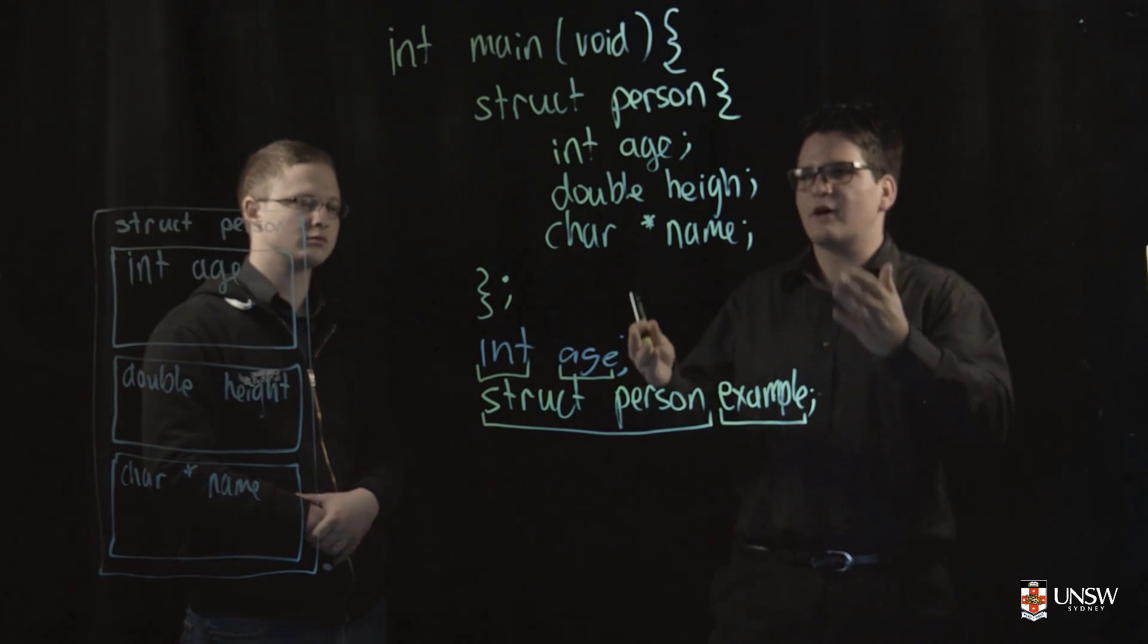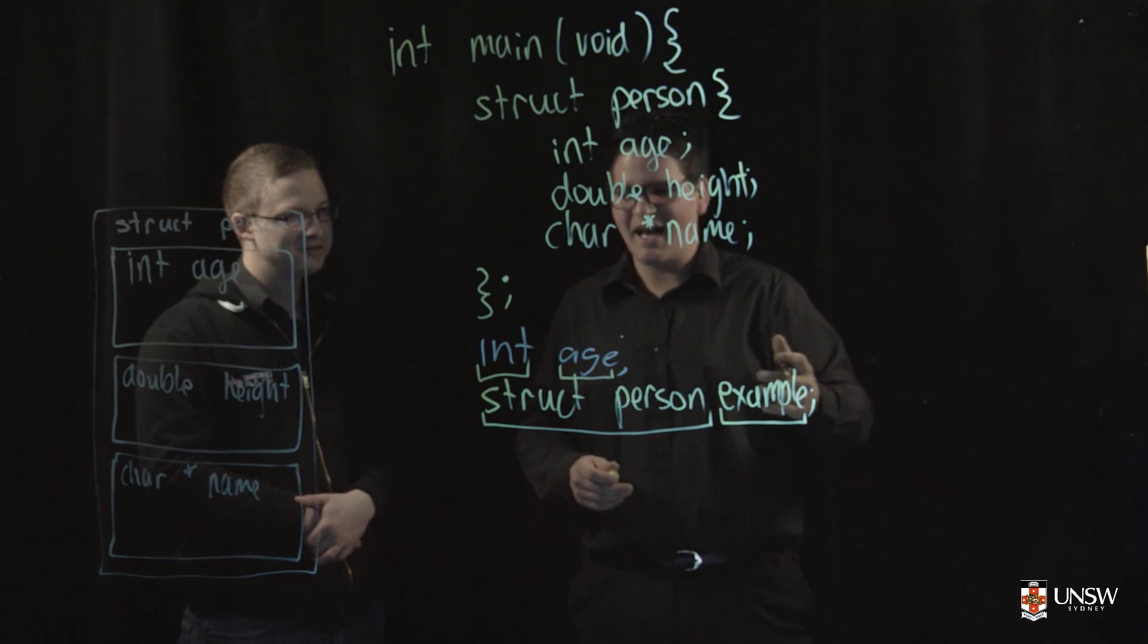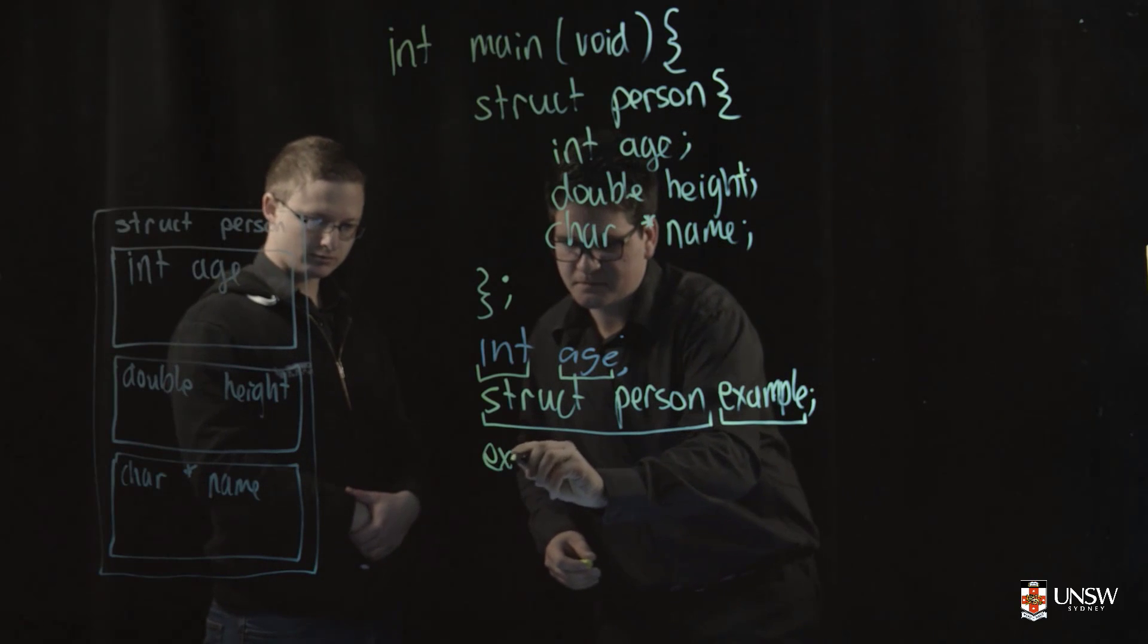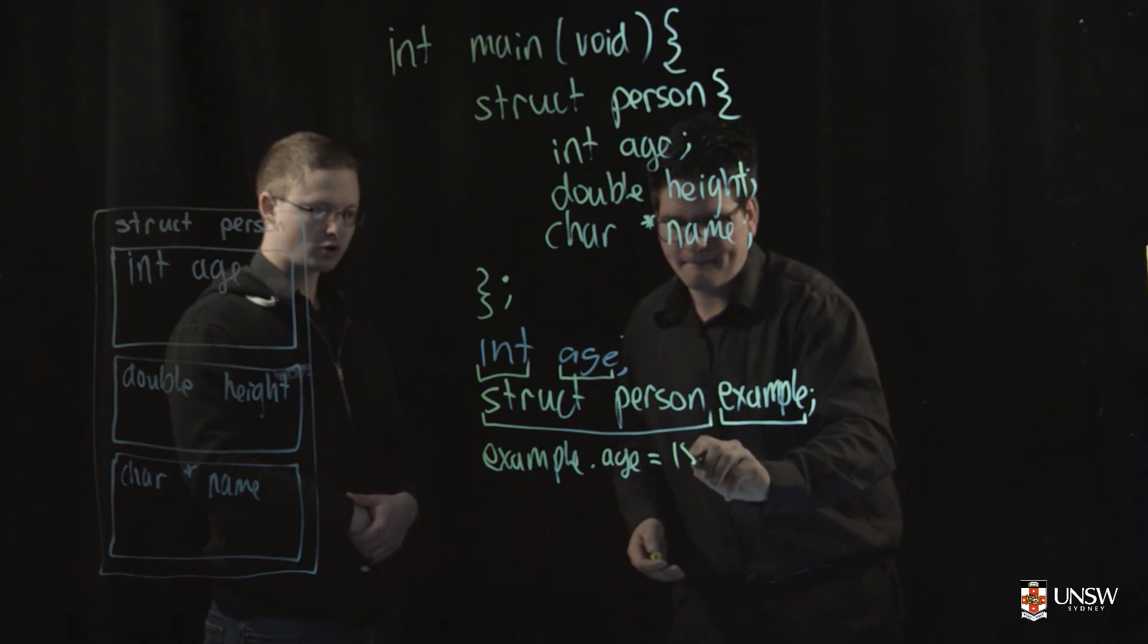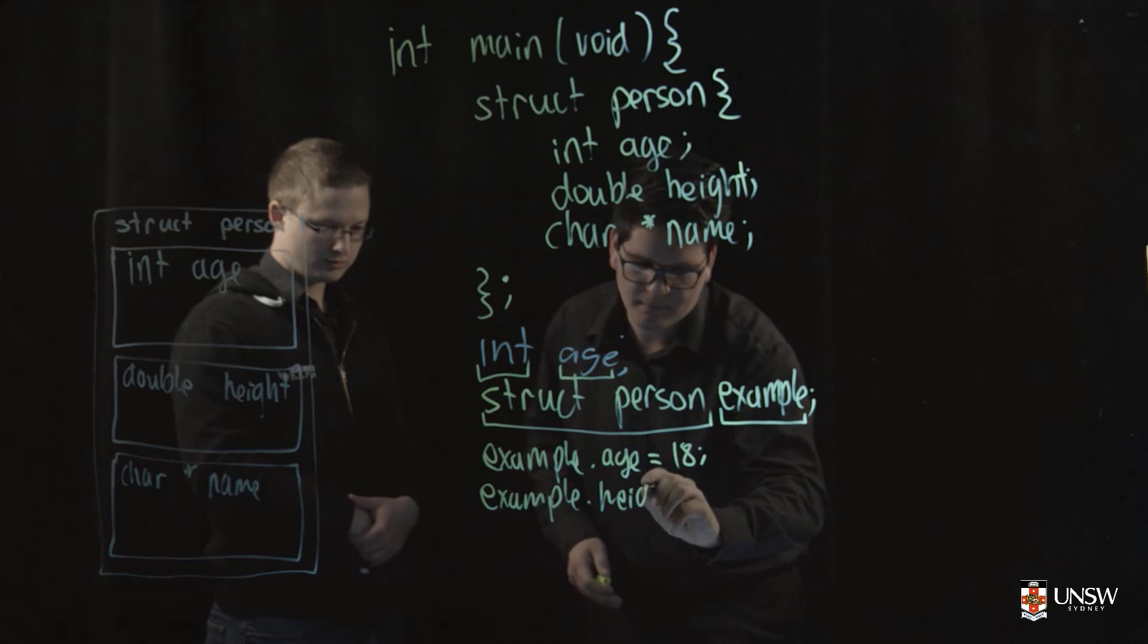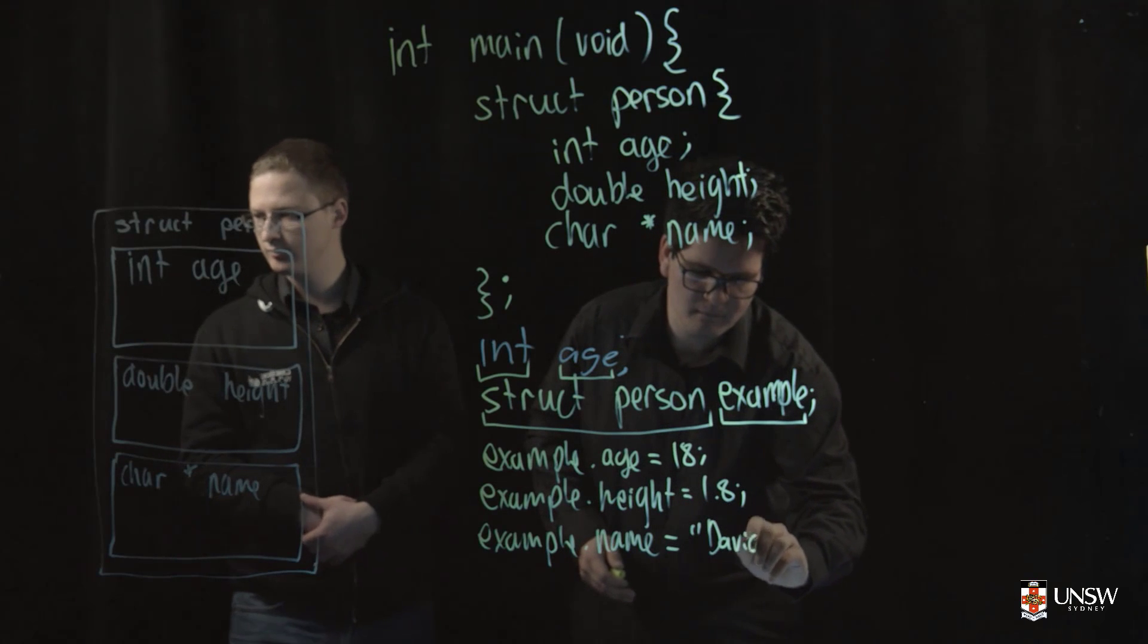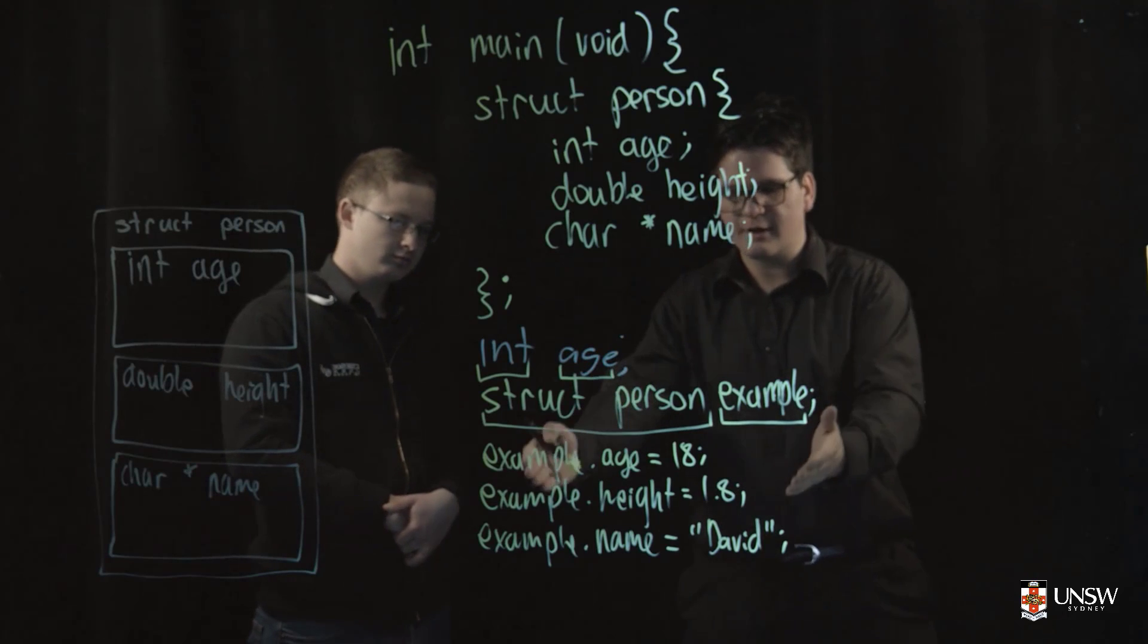And then what we can do is we can initialize our values of our struct person. So we have three fields here: age, height, and name, which I'm just realizing I'm missing a T there. And we can access these fields with the dot. So the dot is C's member access operator and it can assign values and read values from the struct. So what we'll do is we'll write example dot and then the name of the field, age, and we can set it to 18. Cool. We can initialize the other two fields as well. So now we have our struct person in memory. It has an allocation of memory and it's been initialized to the values we've set here.